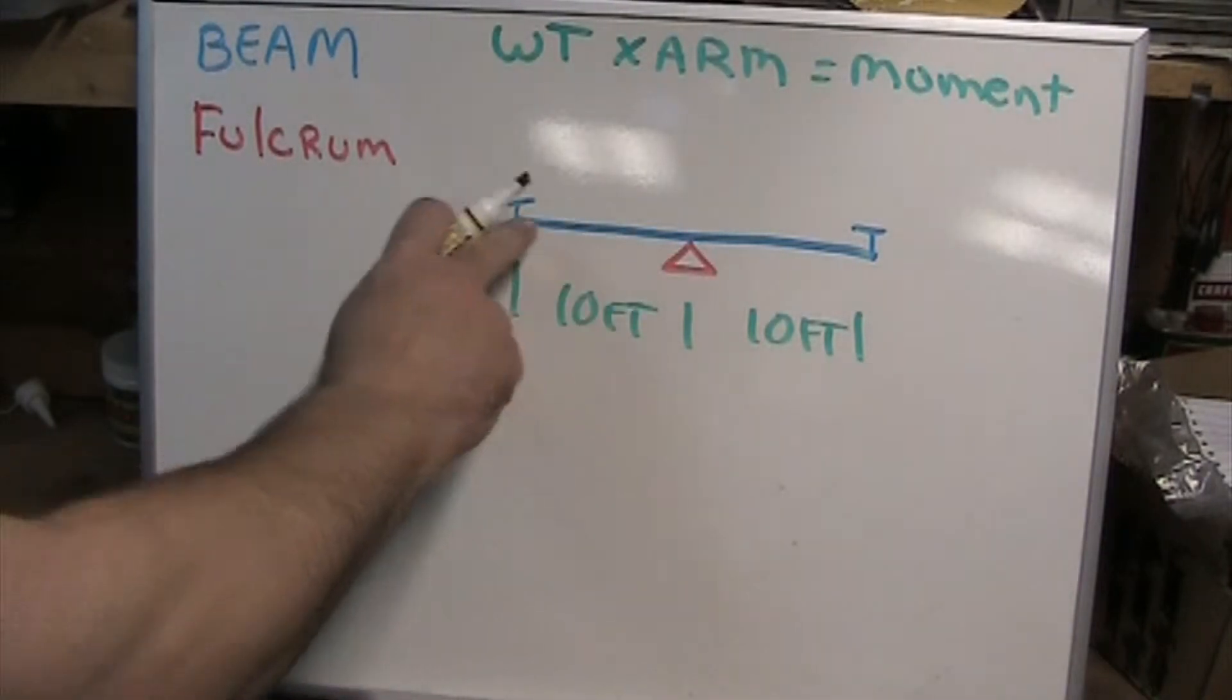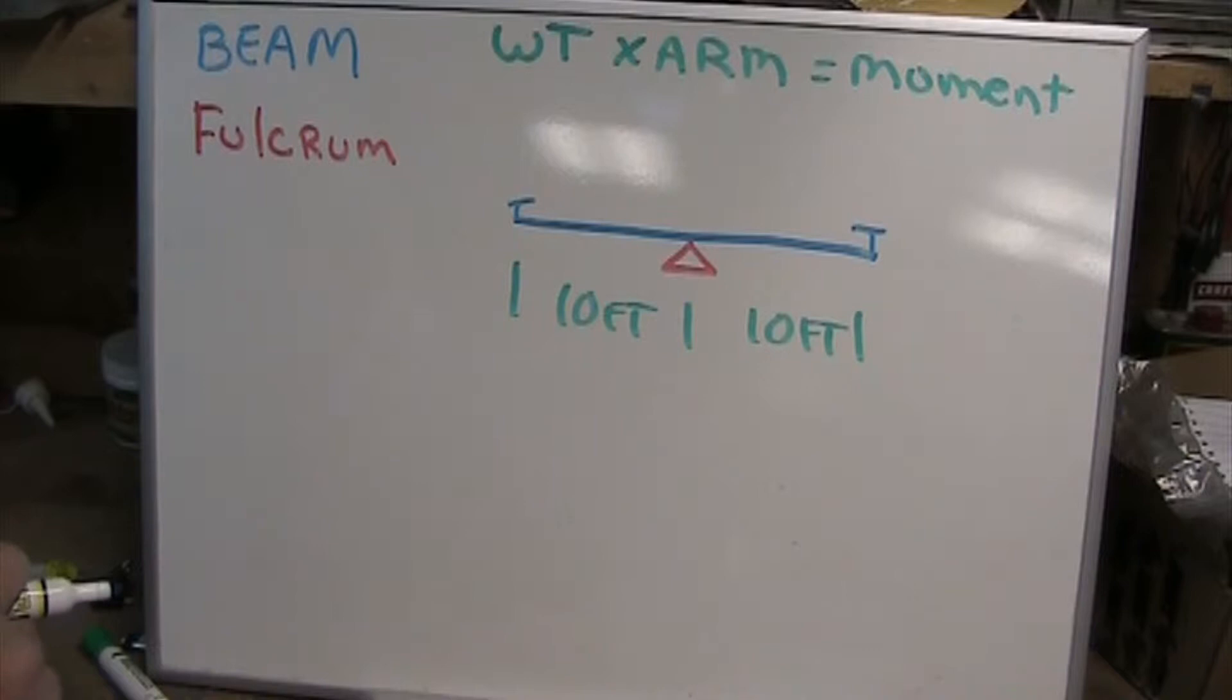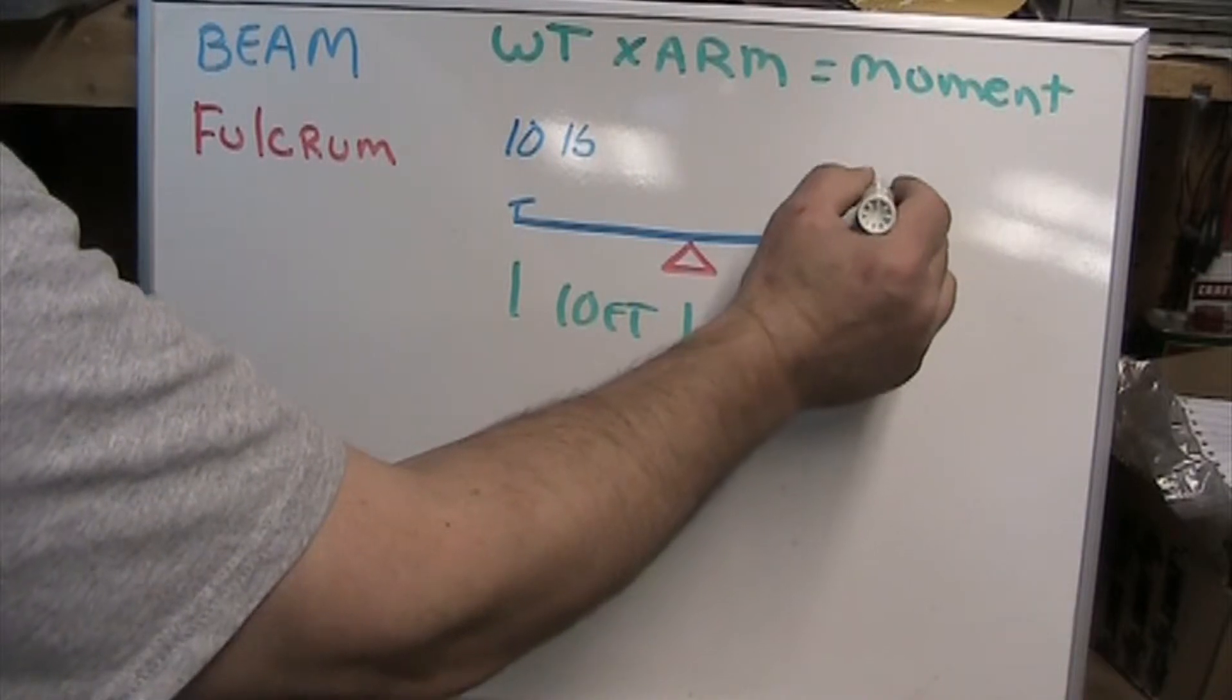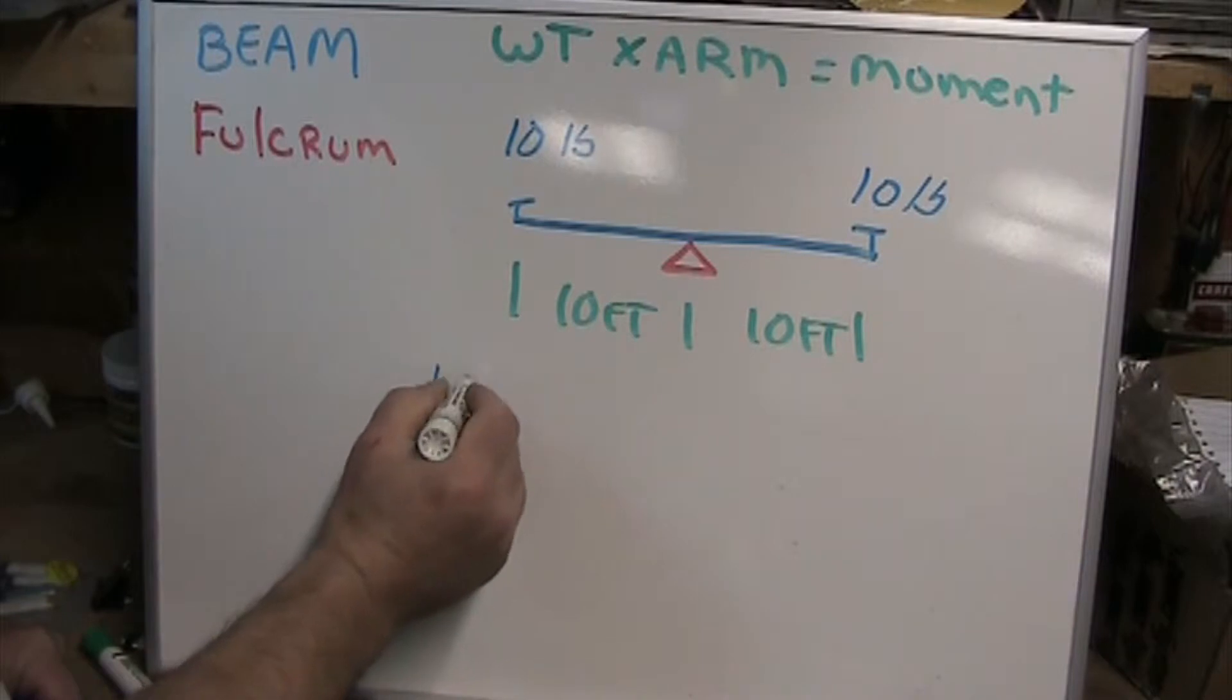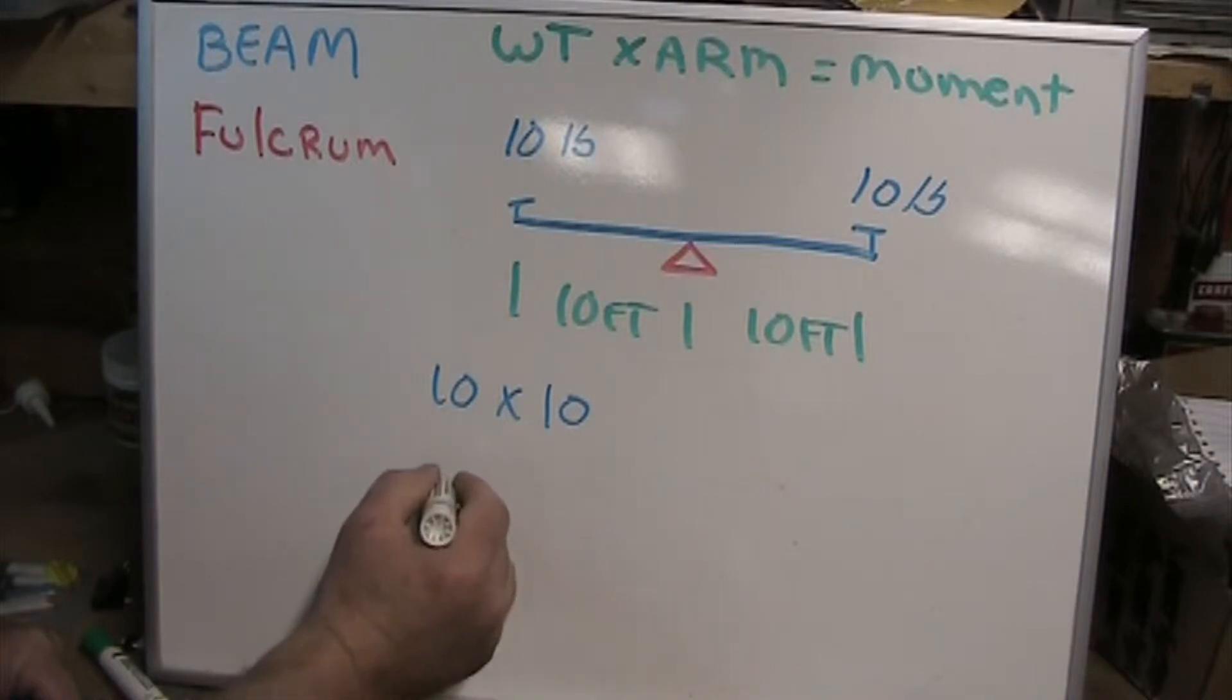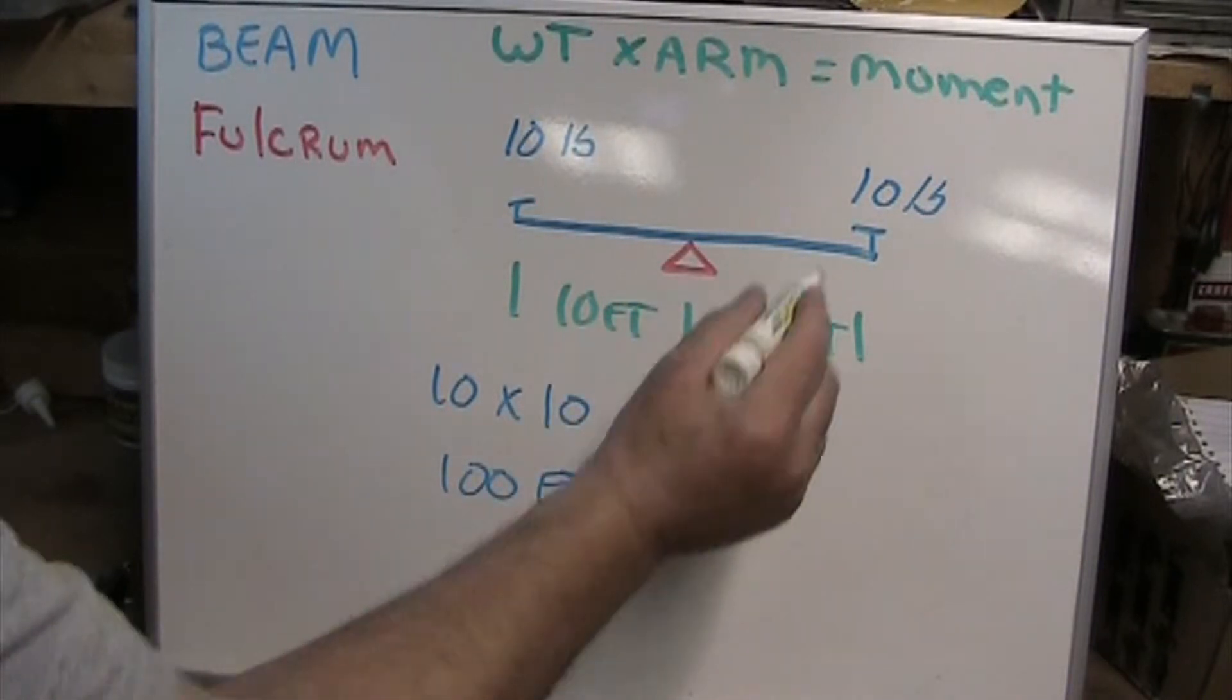I've got two seats here, each distanced 10 feet from the center, the fulcrum. If I place a 10 pound weight on both seats and use our equation: 10 pounds times 10 feet gives us 100 foot-pounds as a moment.